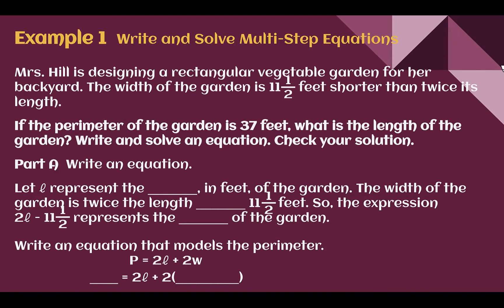Example one: Write and solve multi-step equations. Mrs. Hill is designing a rectangular vegetable garden for her backyard. The width of the garden is 11 and a half feet shorter than twice its length. If the perimeter of the garden is 37 feet, what is the length of the garden? Write and solve an equation and check your solution.